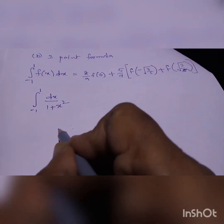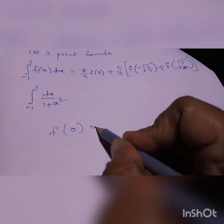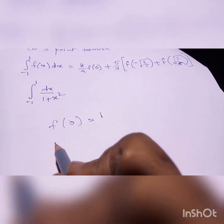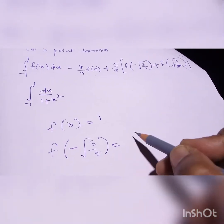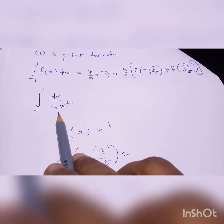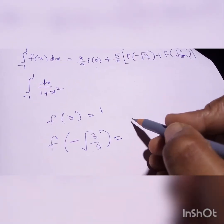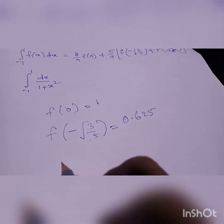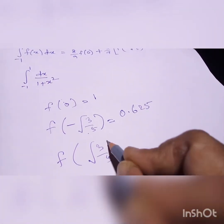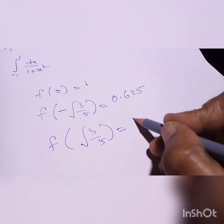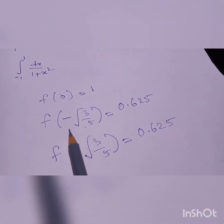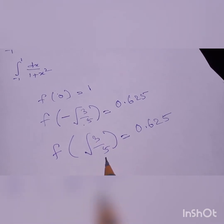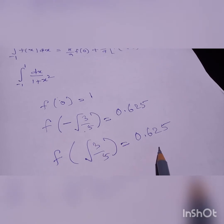Substituting, first we have to find f(0). Substituting 0 for x, we get f(0) = 1. Then find f(-√(3/5)): substituting x = -√(3/5) into 1/(1 + x²), you get 0.625. Similarly, f(√(3/5)) is also 0.625. So we have f(0) = 1, f(-√(3/5)) = 0.625, and f(√(3/5)) = 0.625.